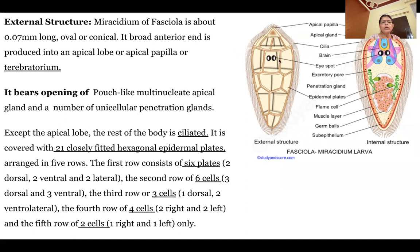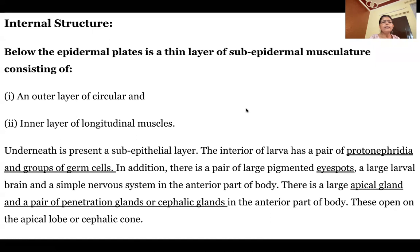In the third row there are 3 cells — 1 dorsal and 2 ventral. In the fourth row there are 2 right and 2 left. In the fifth row there are 2 cells — 1 right and 1 left. As for the internal structure, beneath the epidermal plates there is a thin layer of sub-epidermal musculature made of circular and longitudinal muscles.